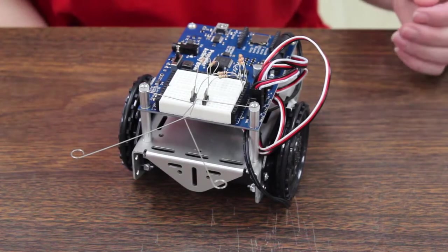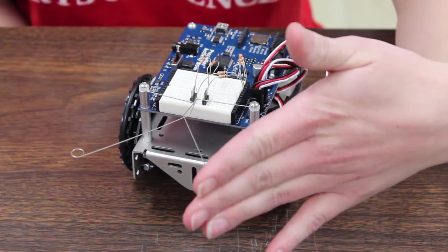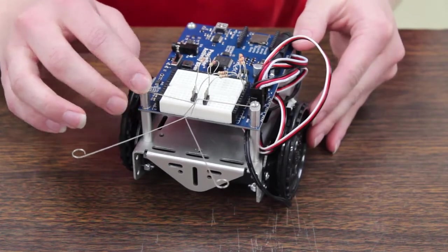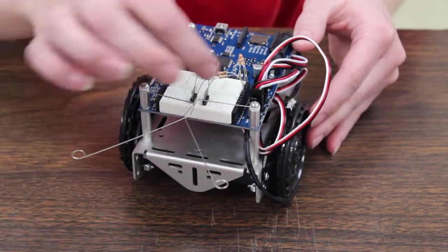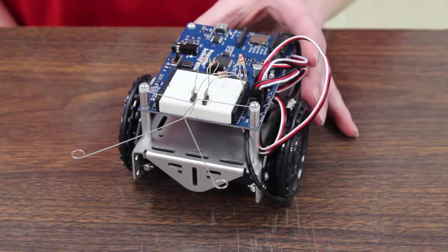Now an important thing to note when you're using the whiskers is that even though if it bumps into something on the left side of the robot, it will register with the right servo. So keep in mind that your left will register with your right and your right will register with your left. And they'll show up at P7 and P8 in your programming.